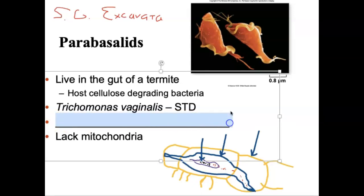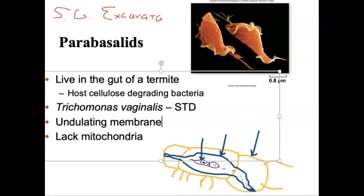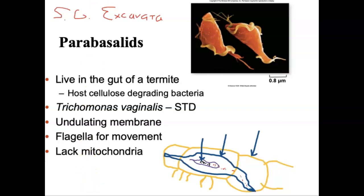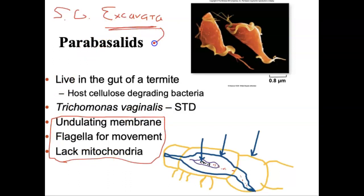So how do we identify a Parabasolid? They're members of supergroup Excavata, so they have that key trait. But once you're in Excavata, to be in Parabasolid you need an undulating membrane — it looks kind of like a little fan or sail wrapped around their body. They're going to have flagella for movement, and the Parabasolids lack mitochondria. Those are the big three characteristics to become a member of this exclusive club known as the Parabasolids. That's our second subcategory within supergroup Excavata.